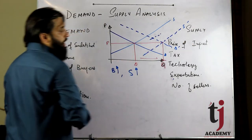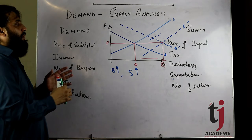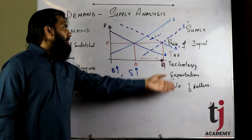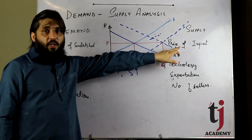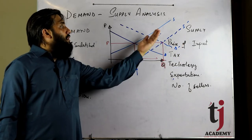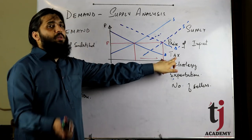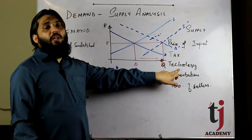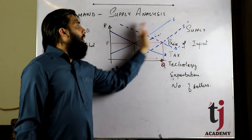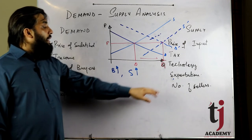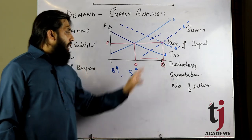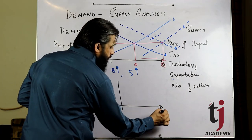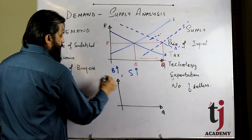Cost of production बढ़ने से supply leftward shift हो जाएगी। Technology बढ़ने का मतलब है आप ज्यादा quantity आसानी से produce कर सकते हैं — supply rightward shift हो जाएगी। अब expectations का case discuss करते हैं — quantity और price के diagram के साथ।